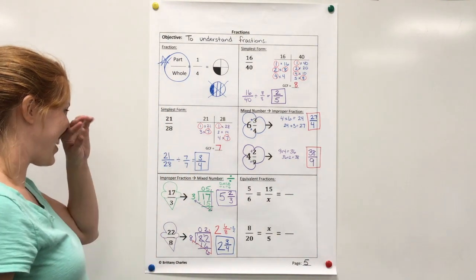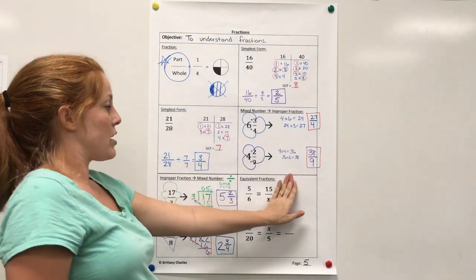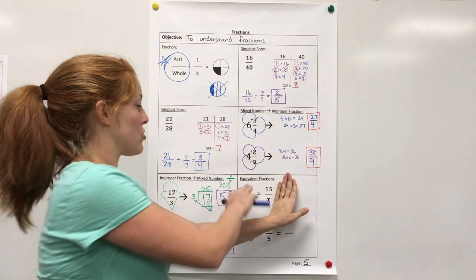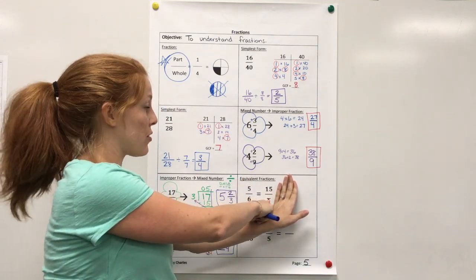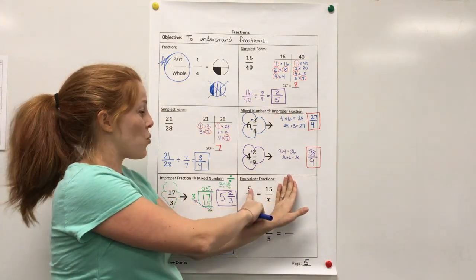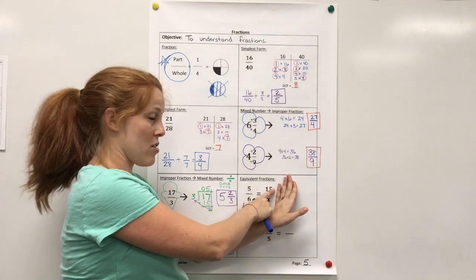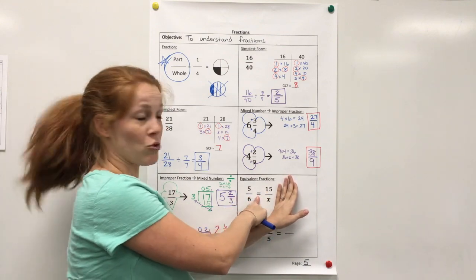All right, last step, equivalent fractions. We're going to ignore this part for now, and just look here. If I was trying to find the missing number here, well, the thing I have to remember is that with equivalent fractions, whatever you do to the numerator, you have to do the same thing to the denominator for them to actually be equal.